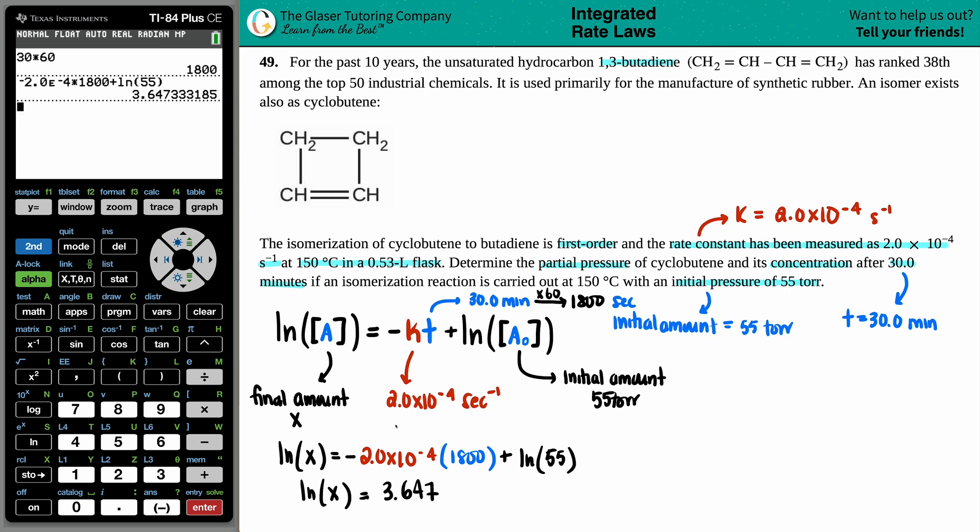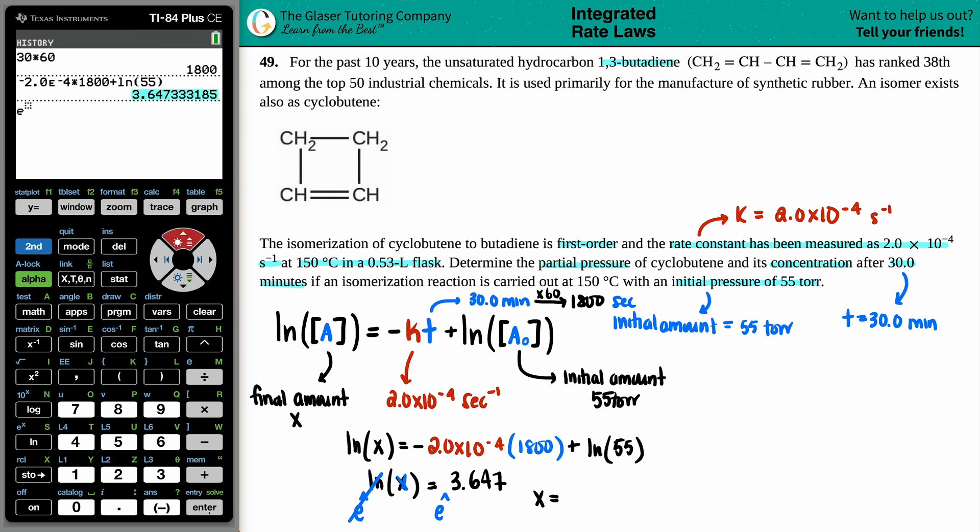We're getting close. We want just x equals. And how are we going to do that? Well, it's attached to the Ln, natural log. So the inverse of Ln is E to the, but you got to be fair. If you do E on this side, you got to do E on the other side. So the E will cancel out. And now we just get x equals. So E raised to that value, you get roughly 38.4. And they gave me two sig figs for the pressure. So maybe we'll give two sig figs back. 38 torr.